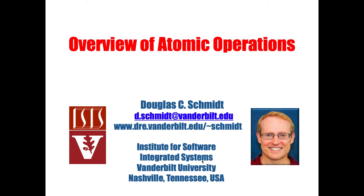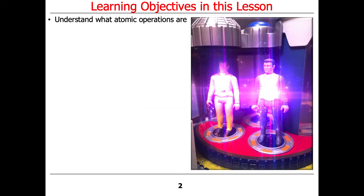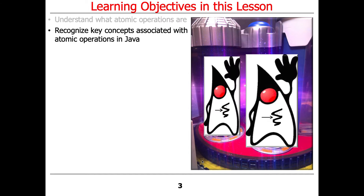Now we're ready to turn our attention to atomic operations. We're going to talk about those because that's part of the next assignment — assignment 1b — which is atomic operations used for spin locks. We'll start by talking about what atomic operations are, and then we'll also talk about some key concepts associated with atomic operations in Java.